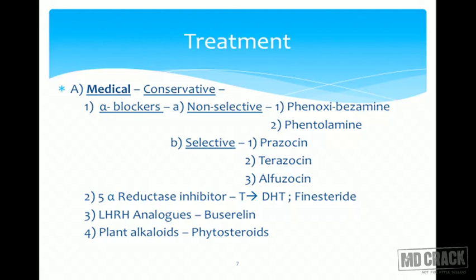After knowing the scoring system, we move on to the various treatment options. Treatment options are: medical or pharmacological treatment, semi-conservative or endoscopic treatment, and definitive surgical treatment. Starting with conservative treatment, the first option is the use of alpha blockers, which are of two types: non-selective versus selective. Non-selective examples include phenoxybenzamine and phentolamine, but what we prefer is selective blockage.